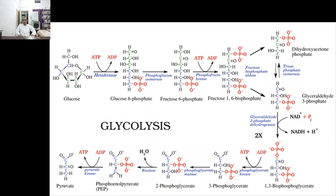Hexokinases are 100 kDa molecules thought to have evolved by duplication and fusion of a gene encoding an ancestral 50 kDa hexokinase. These isoenzymes display internal sequence repetition, and the amino and carboxyl terminal halves have extensive sequence similarity. Several studies demonstrate that hexokinase — particularly the type 2 isoform — plays a critical role in initiating and maintaining the high glucose catabolic rates of rapidly growing tumors. Most immortalized and malignant cells display increased expression of hexokinase type 2, contributing to elevated glycolysis.